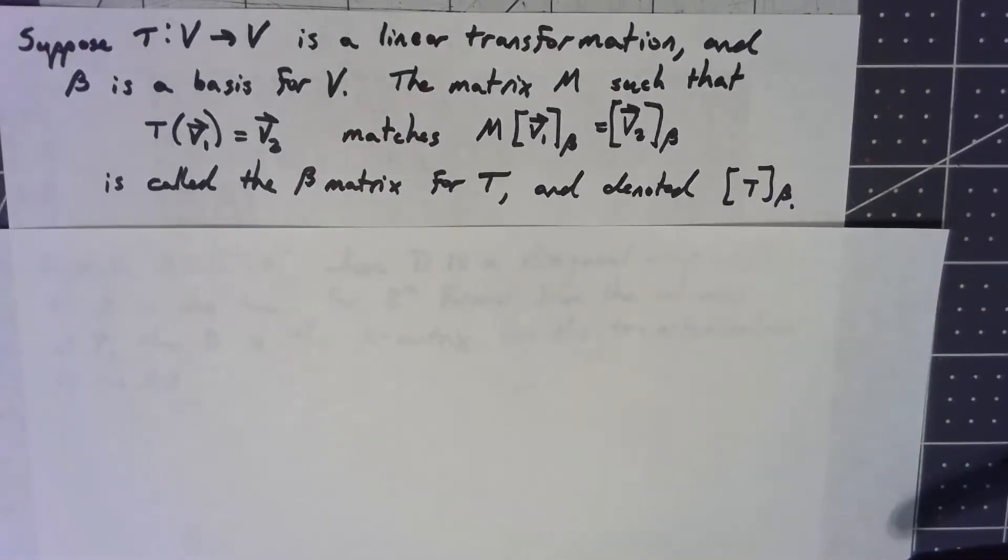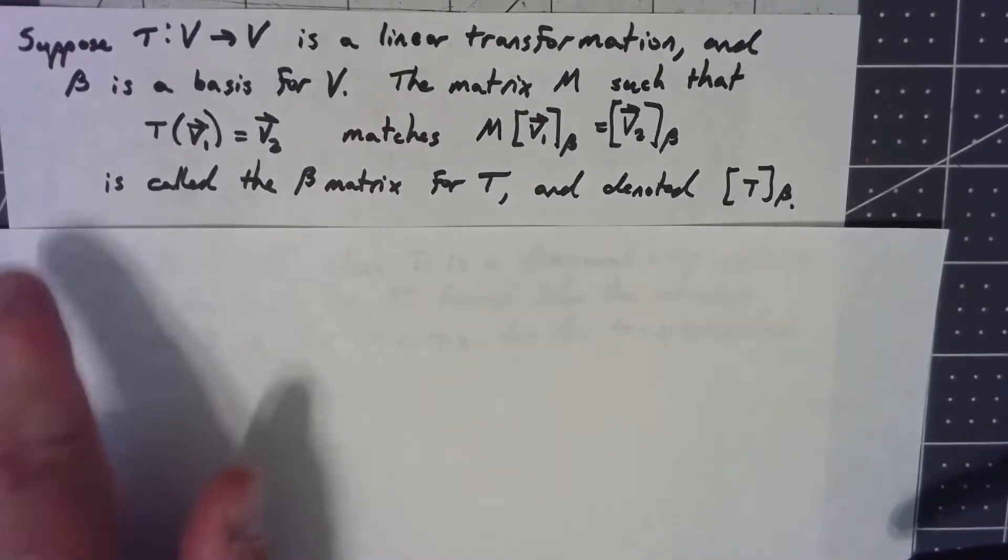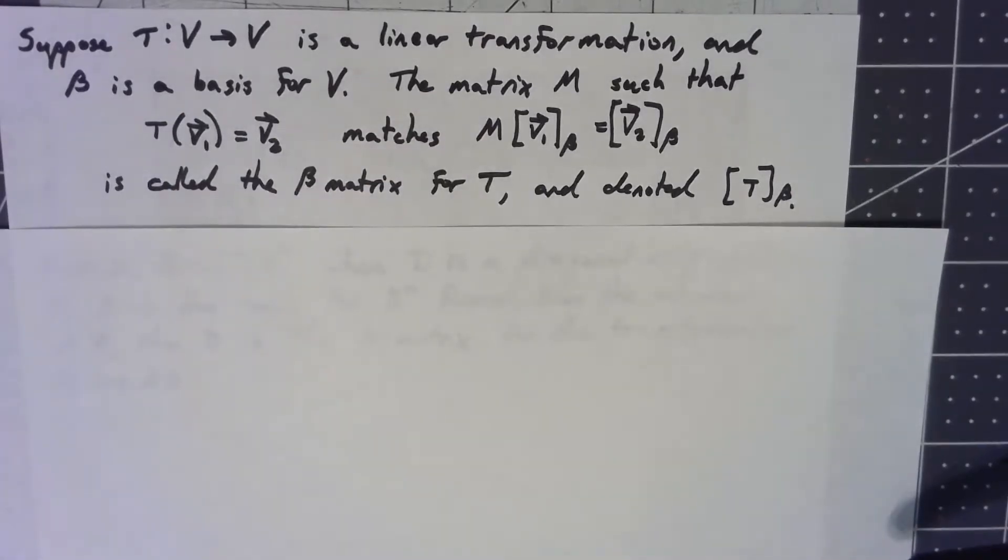It's a fairly common occurrence for linear transformations to actually map a vector space into itself. So suppose we got a vector space like that, and we got a basis for that vector space, and we're going to use the same basis for both instances.